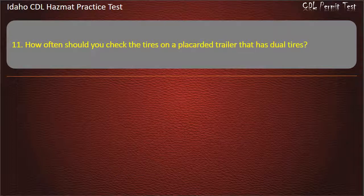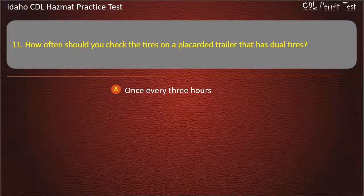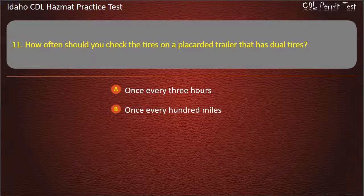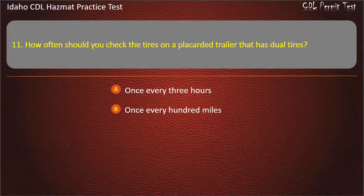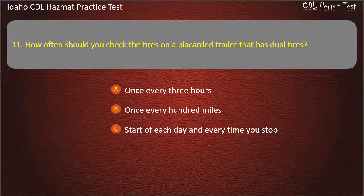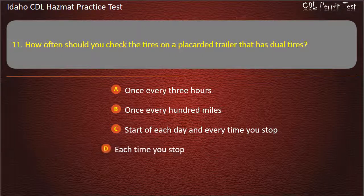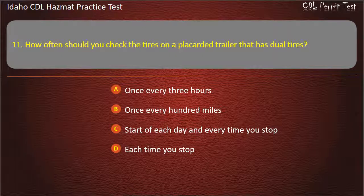Question 11. How often should you check the tires on a placarded trailer that has dual tires? Once every 3 hours. Once every 100 miles. Start of each day and every time you stop. Each time you stop. Answer: Each time you stop.